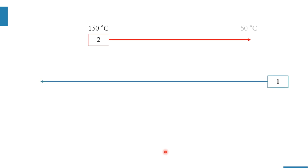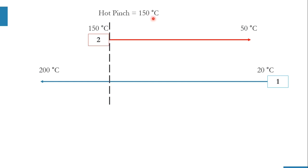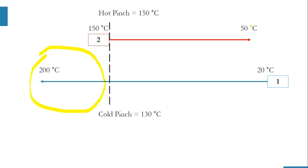Hot stream 2 is drawn from 150°C to 50°C and cold stream 1 from 20°C to 200°C. The hot pinch temperature is 150°C and cold pinch temperature is 130°C. We divide the problem into two parts at the pinch. Above pinch, there is only one stream — the cold stream — going from 130°C to 200°C. Below pinch there are two streams: the hot stream and the cold stream.